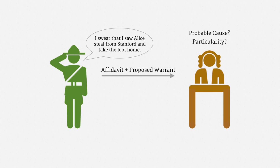So if Peter just wanted to ransack Alice's home, there would be no probable cause. And if Peter wanted an unlimited search of the home — not just to find the loot — then the warrant wouldn't be particular. Finally, the judge makes a decision: they can issue the warrant or they can reject the application. Sometimes the judge will also write an opinion explaining why they approved or rejected the application.